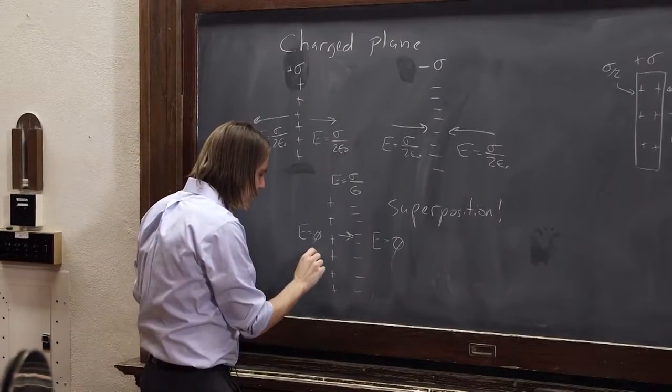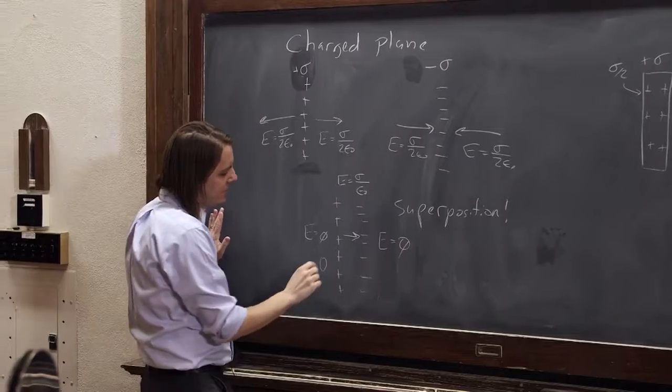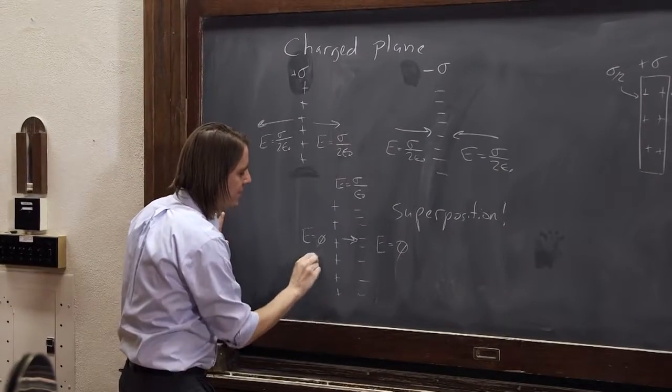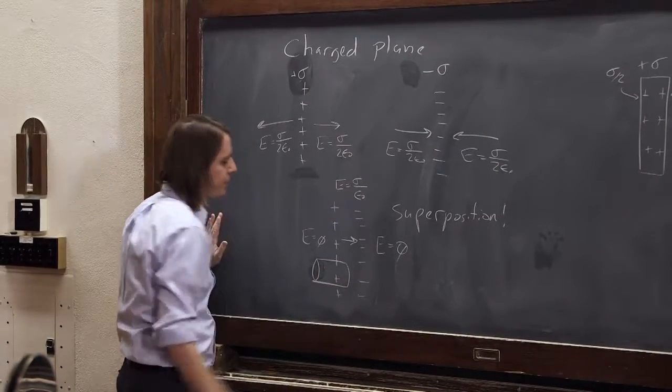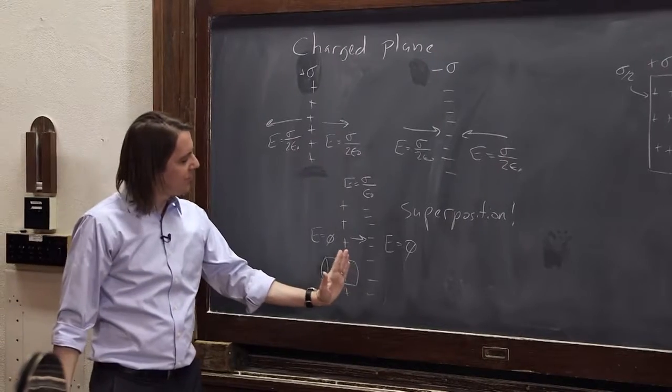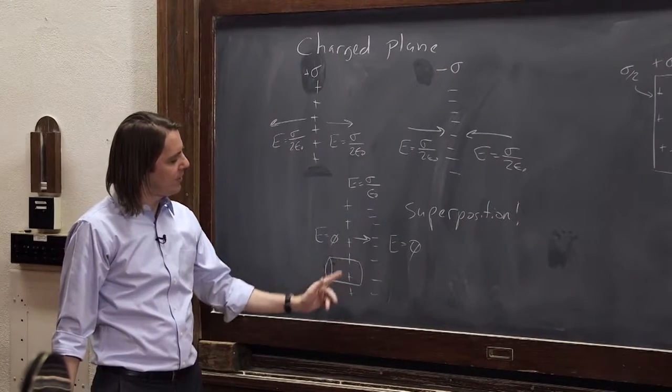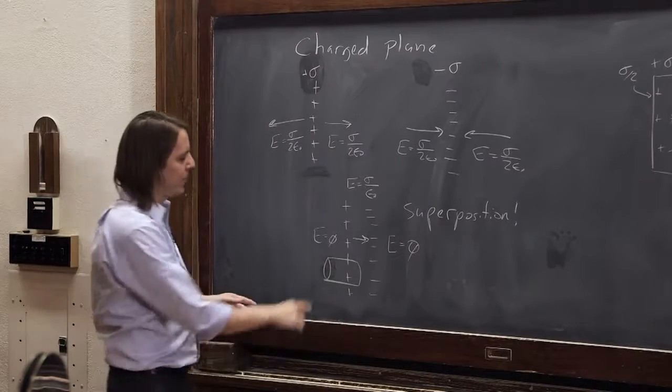Let's check Gauss's law here. So here we're going to make a little Gaussian surface like this. It goes into the capacitor, half of it's outside of the capacitor, and it contains one of the two surfaces. Let's make sure it's correct.